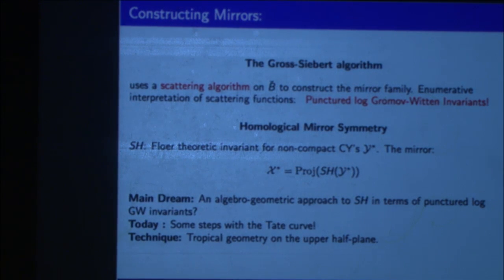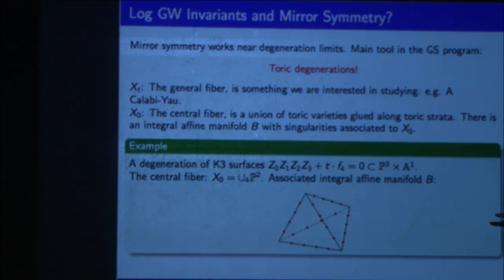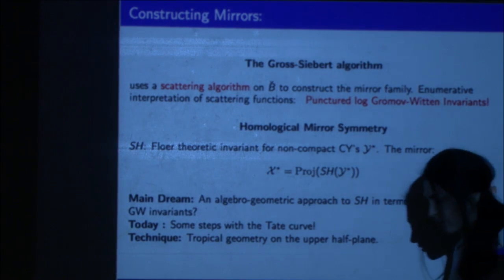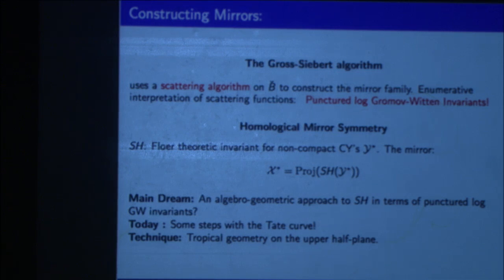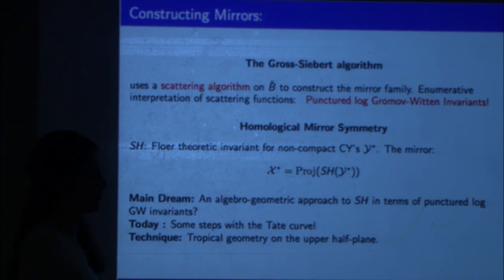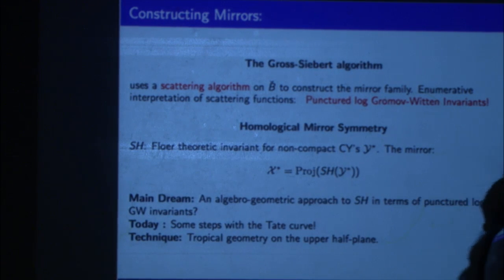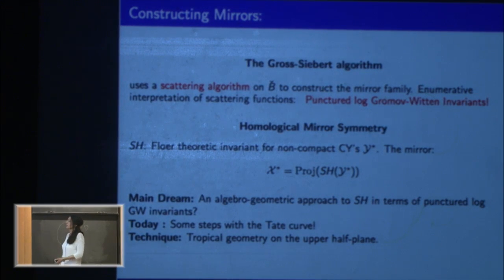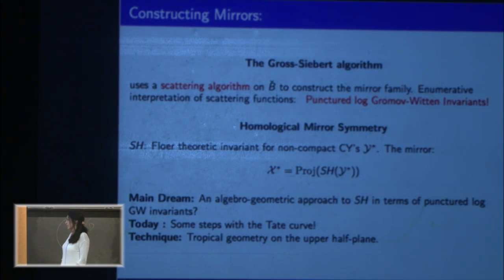Then what you do is you run the Gross-Siebert algorithm. You first construct from this integral affine manifold B, B-check, a dual integral affine manifold with some dual combinatorial data. You apply a procedure called discrete Legendre dual, and then you do some scattering algorithm on this integral dual integral affine manifold. It's similar to a Kontsevich-Soibelman algorithm, a pretty complicated algorithm that's used to construct the coordinate ring of the mirror family. That's essentially the Gross-Siebert reconstruction theorem and their annals paper. And it turns out that the scattering functions appearing in this algorithm have some nice enumerative interpretation in terms of some punctured log Gromov-Witten invariants. So the coefficients appearing in these scattering algorithms give some punctured log Gromov-Witten invariants. That's how they appear in this mirror construction.